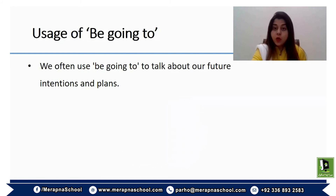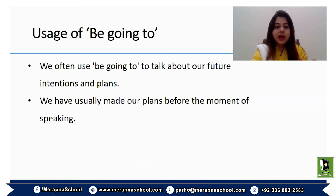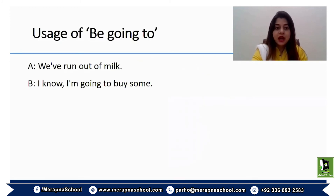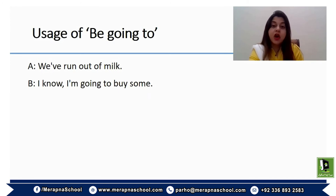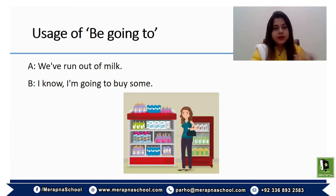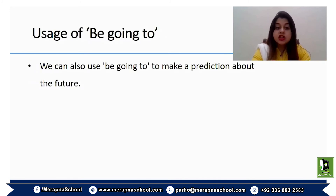'Be going to' is also a very common way of talking about future intentions or plans where the plans have been made before the moment of speaking. For instance, one person says 'We have run out of milk,' and the second person replies 'I know, I'm going to buy some.' There is no 'will' in this sentence, but this is one way of referring to a future activity, intention, or plan.